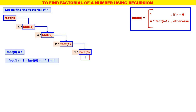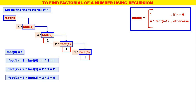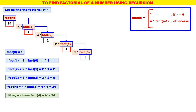What is fact of 1? Fact of 1 is 1 into fact of 0. We know fact of 0 is 1, therefore 1 into 1 is equal to 1. What is fact of 2? Fact of 2 is 2 into fact of 1. Fact of 1 is 1, therefore 2 into 1 is equal to 2. Similarly, fact of 3 is 3 into fact of 2. Fact of 2 is 2, therefore 3 into 2 is 6. Last, fact of 4 is 4 into fact of 3. Fact of 3 is 6, therefore 4 into 6 is 24. We have factorial of 4 is equal to 24.